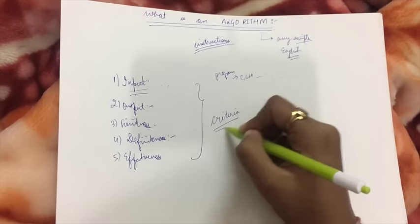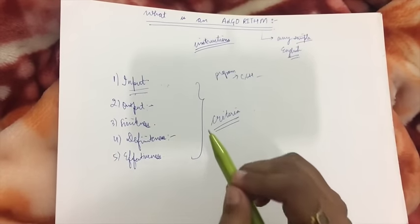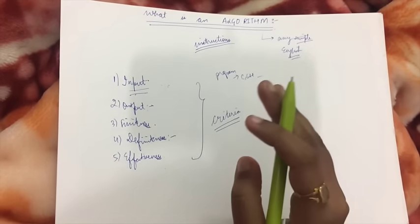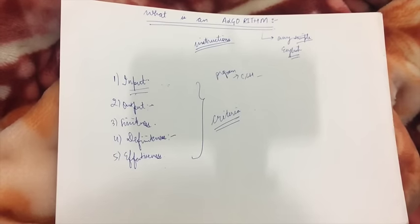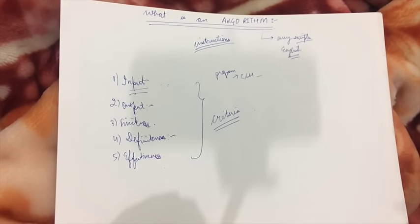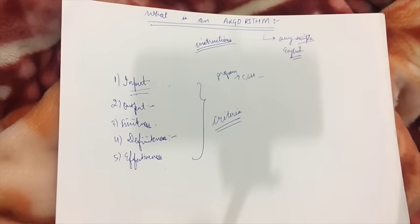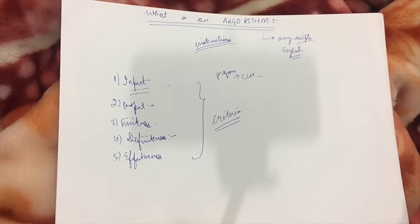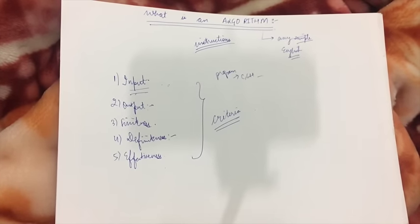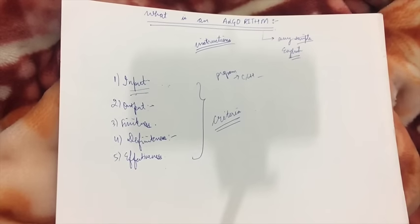Effectiveness means that every instruction must be so clear that we could implement it simply with the help of pen and paper. An algorithm is a very simple procedure to solve any problem. If a problem is big, we'll divide it into smaller parts. We have various types of algorithms which actually help you solve very complex problems in a very simple way.